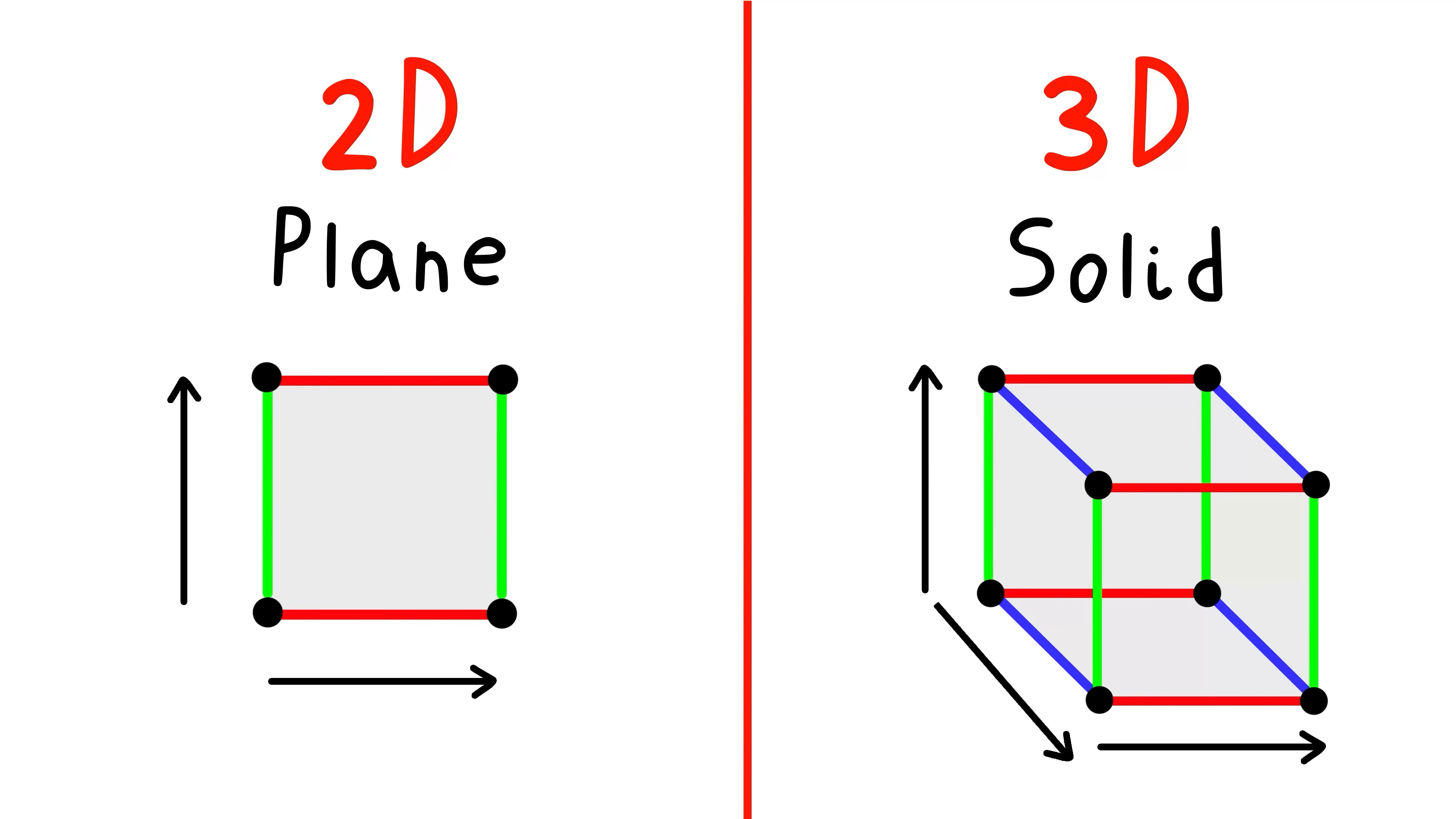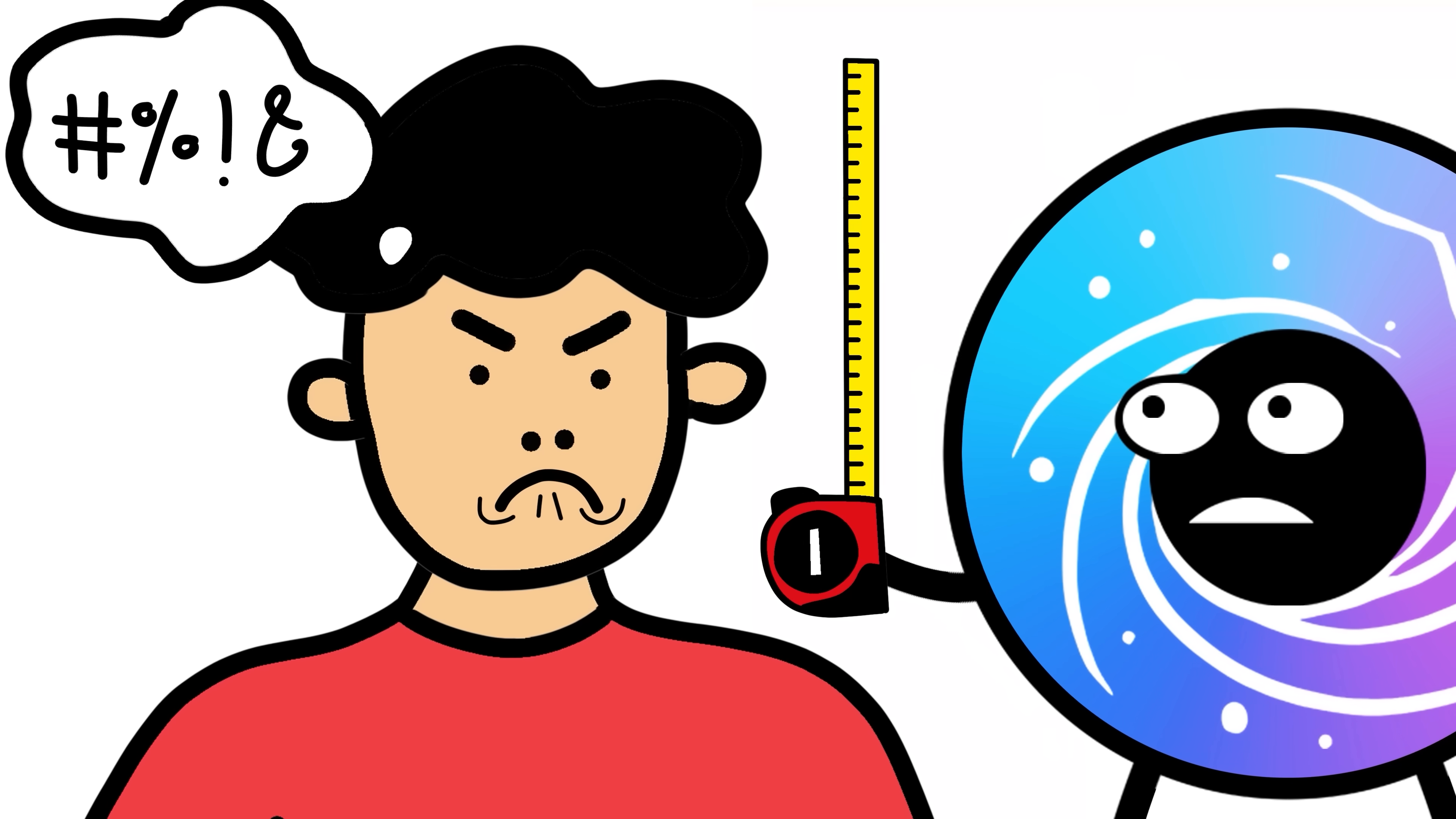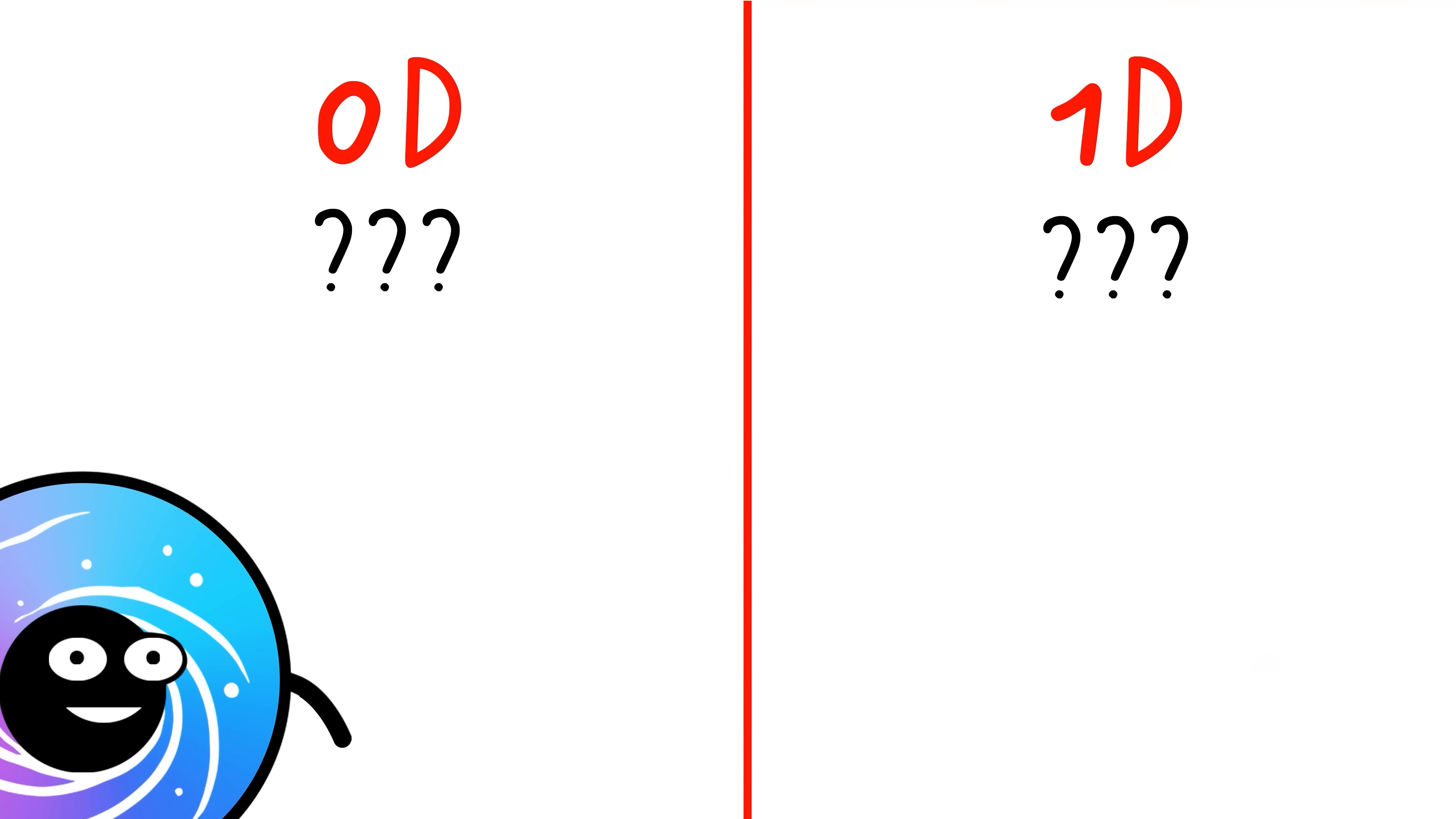Right, anyone who went to school knows that two dimensions is left and right like a plane, and three dimensions is up and down. You know, volume. Like your giant head. But Kyle, have you ever thought about the first dimension, 1D, or even the zero dimension?